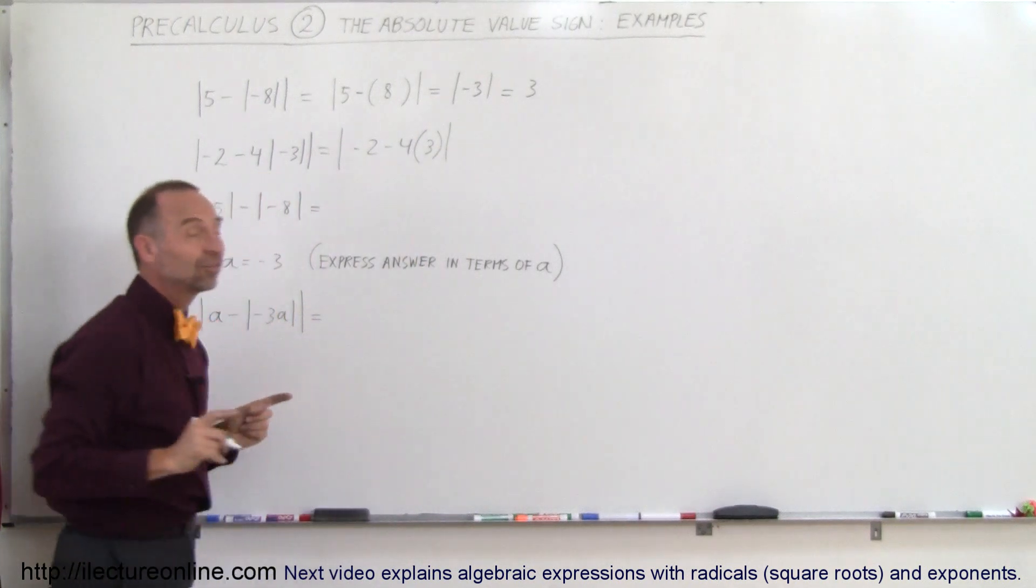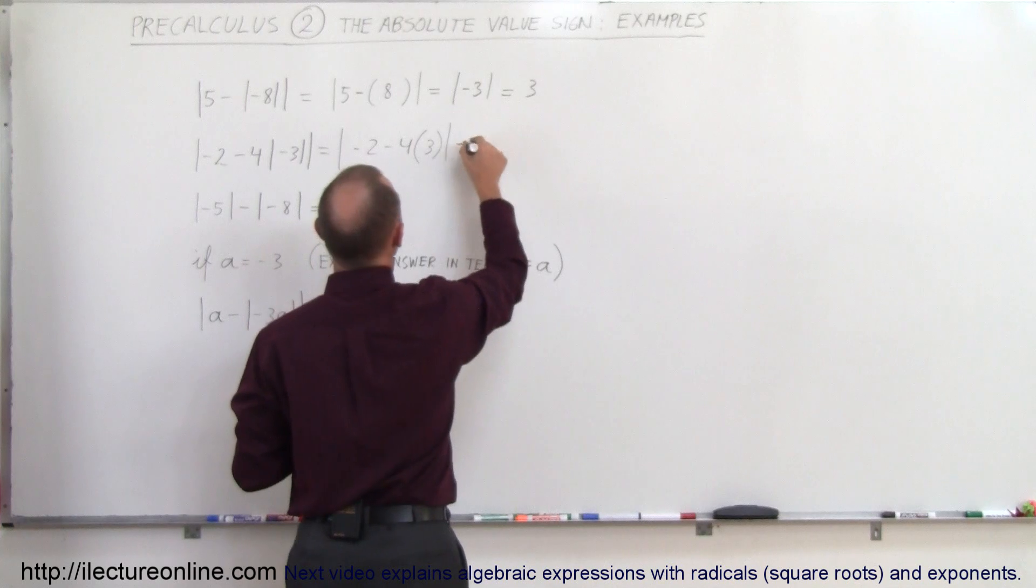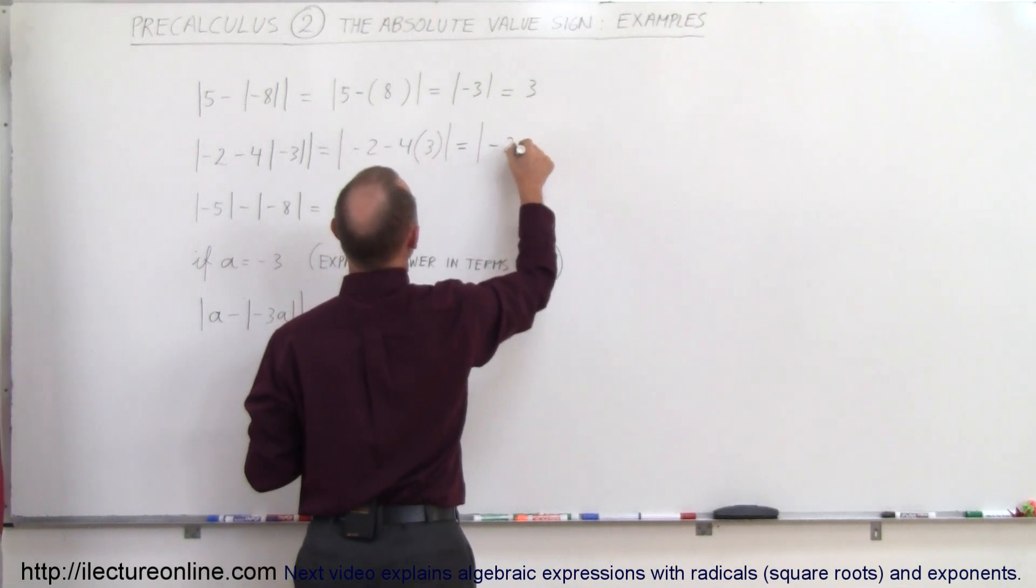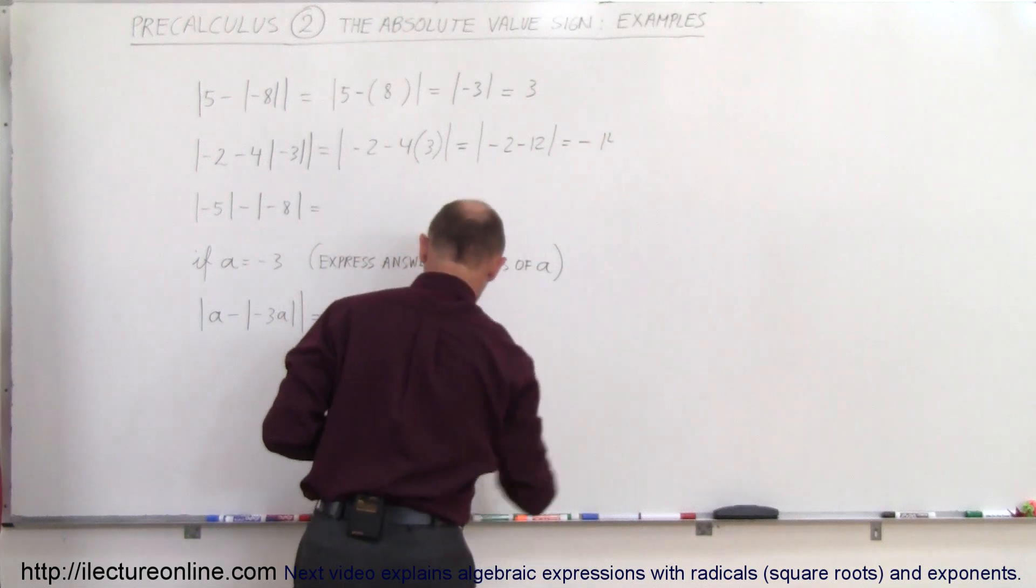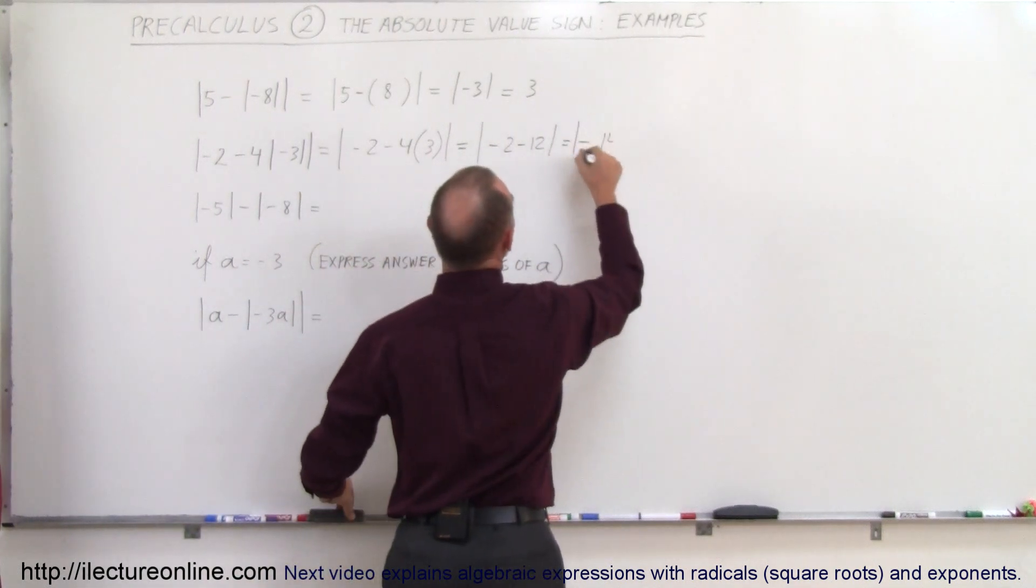And now you see I have minus 4 times 3, which is minus 12, so this equals the absolute value of minus 2 minus 12, which is equal to the absolute value of minus 14.